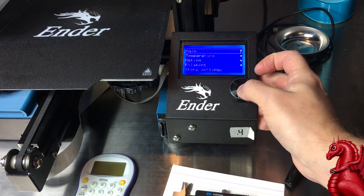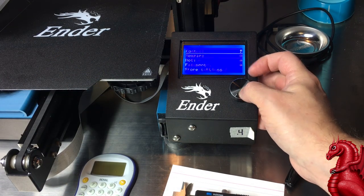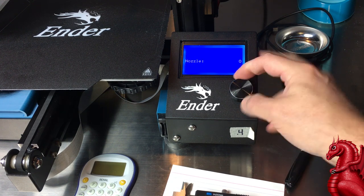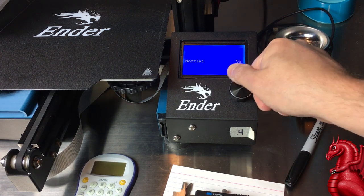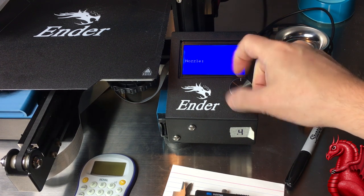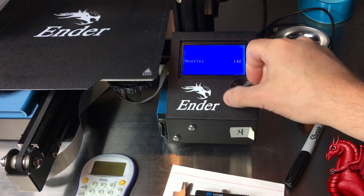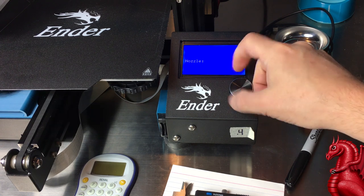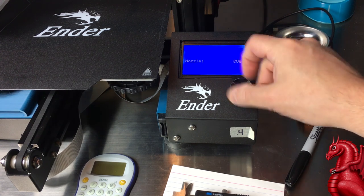We're going to start off with heating the printer up. You want to put this to about the temperature range that you normally print at. If you go too hot, the filament is going to feed too easily and it won't give you an accurate representation of what you're actually feeding at your normal print temps.